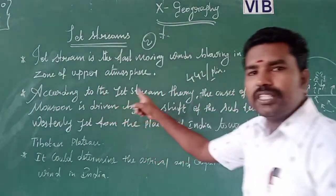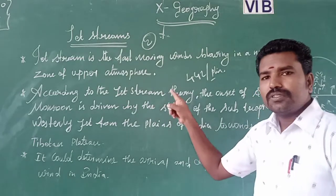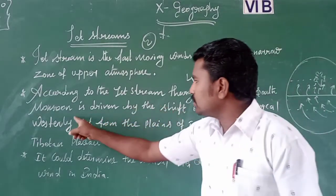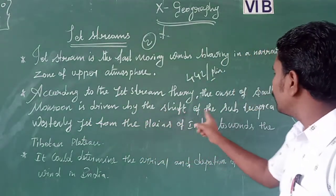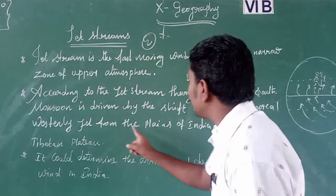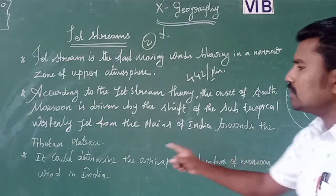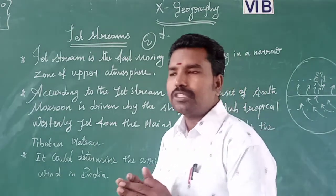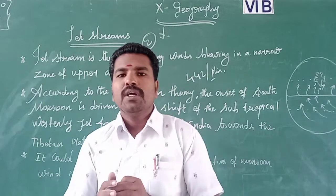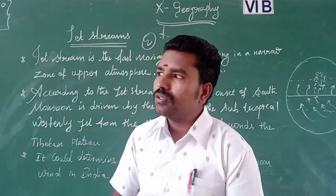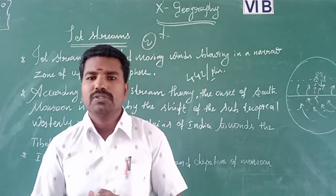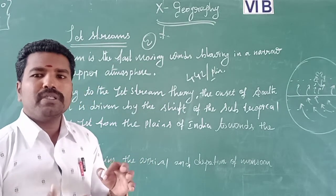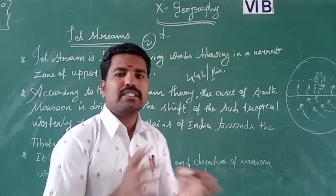According to the jet stream theory, the onset — meaning the beginning — of the southwest monsoon is driven by the shift of the subtropical western jet from the plains of India towards the Tibetan plateau. Southwest monsoon is very significant because the entire India receives more than 80% of rainfall from it. Southwest monsoon starts from June, July, August, and September — continuously four months — giving rainfall to the entire India except Tamil Nadu.